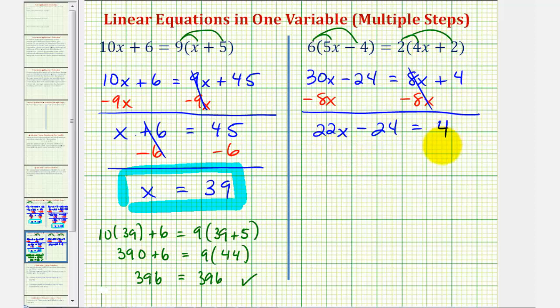Now we have a basic two-step equation. So to isolate the variable term, we'll undo the subtraction by adding 24 to both sides of the equation. This would be zero. So we have 22x = 4 + 24 = 28.